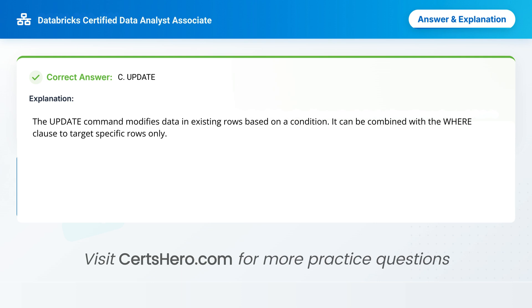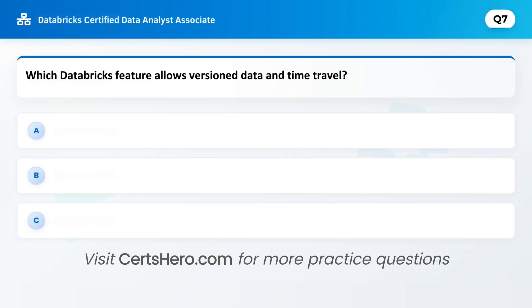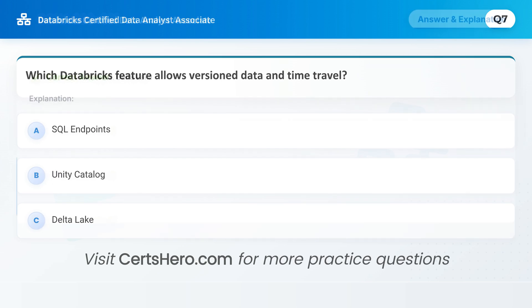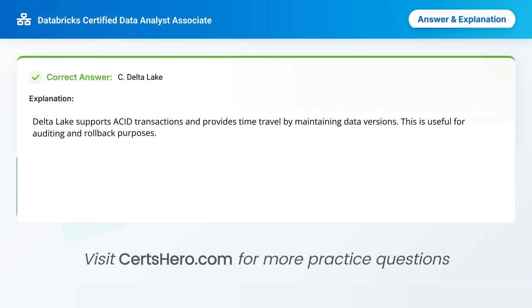Which Databricks feature allows versioning data and time travel? A. SQL endpoints. B. Unity Catalogue. C. Delta Lake. Correct answer is C: Delta Lake. Delta Lake supports ACID transactions and provides time travel by maintaining data versions. This is useful for auditing and rollback purposes.